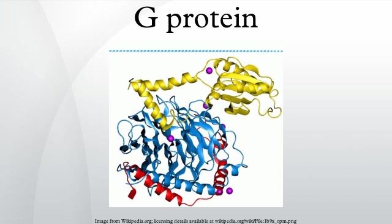Different types of heterotrimeric G-proteins share a common mechanism. They are activated in response to a conformational change in the GPCR, exchanging GDP for GTP, and associating in order to activate other proteins in a particular signal transduction pathway. The specific mechanisms, however, differ between protein types. Receptor-activated G-proteins are bound to the inner surface of the cell membrane. They consist of the Gα and the tightly associated Gβγ subunits. There are many classes of Gα subunits — Gαs, Gαi, and Gα12/13 are some examples. They behave differently in the recognition of the effector molecule, but share a similar mechanism of activation.